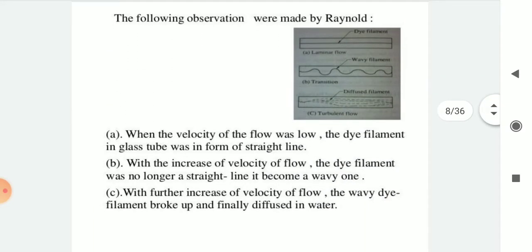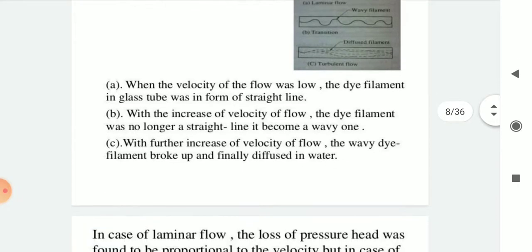The following observations were made by Reynolds. In case A, when the velocity of flow was low, the dye filament in the glass tube was in the form of a straight line — this is laminar flow. In case B, with the increase of velocity, the dye filament was no longer straight but became wavy — this is transition flow. In case C, with further increase of velocity, the wavy dye filament broke up and finally diffused into the water — this is turbulent flow.